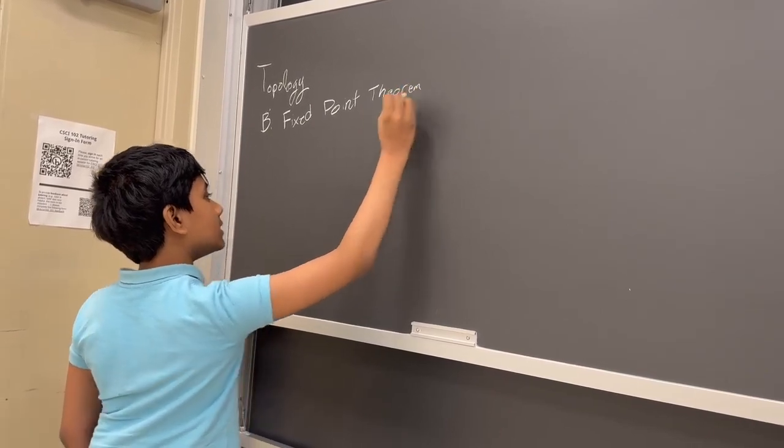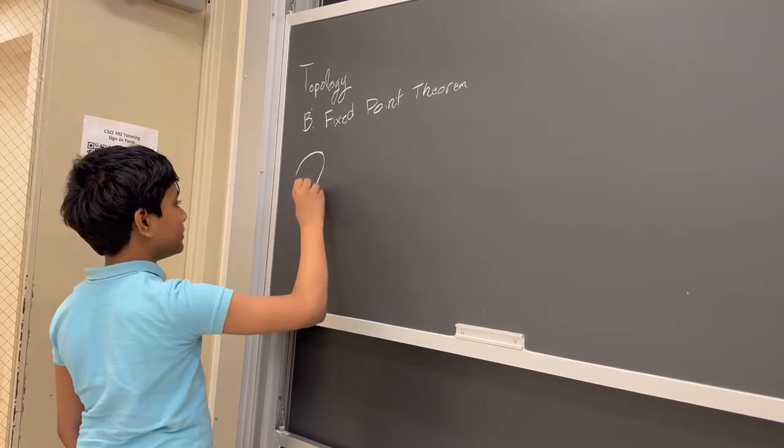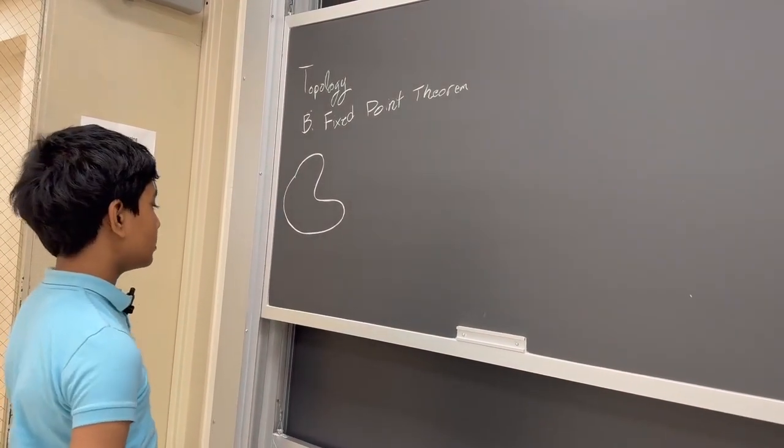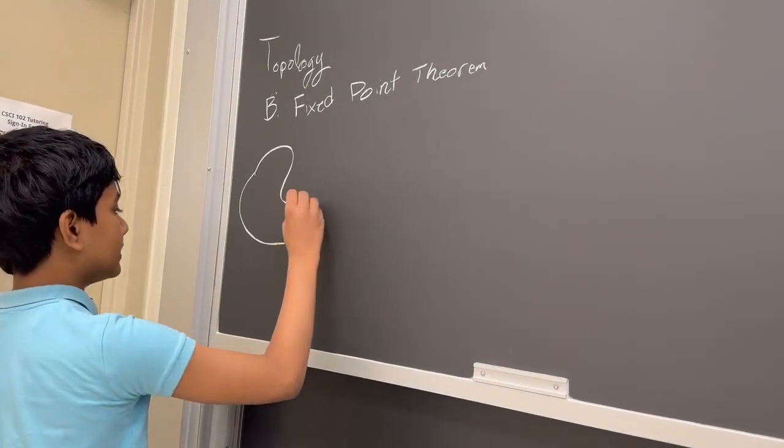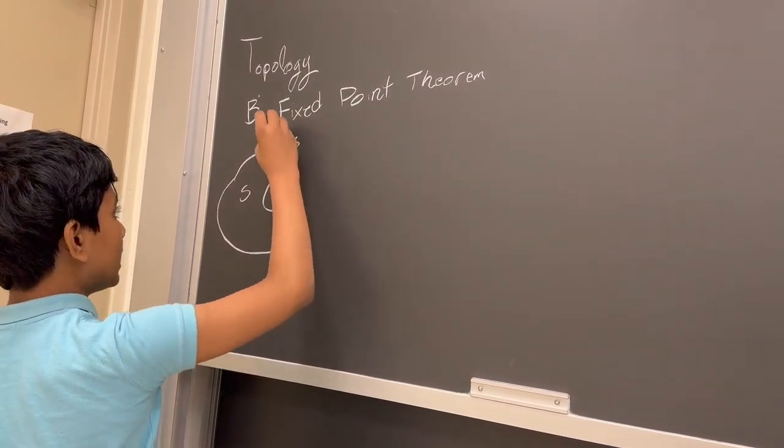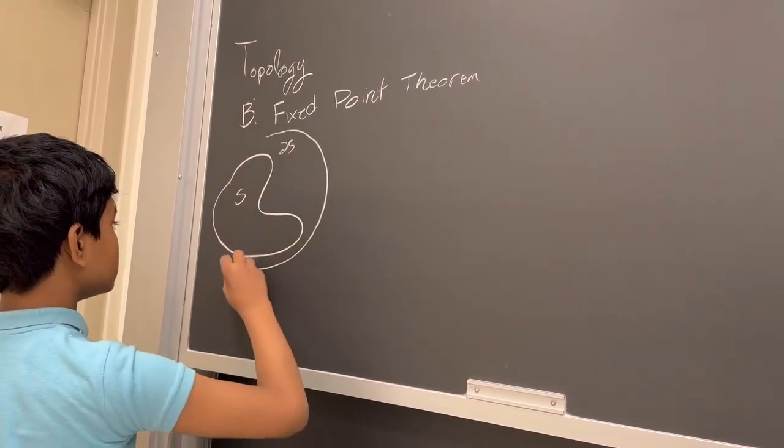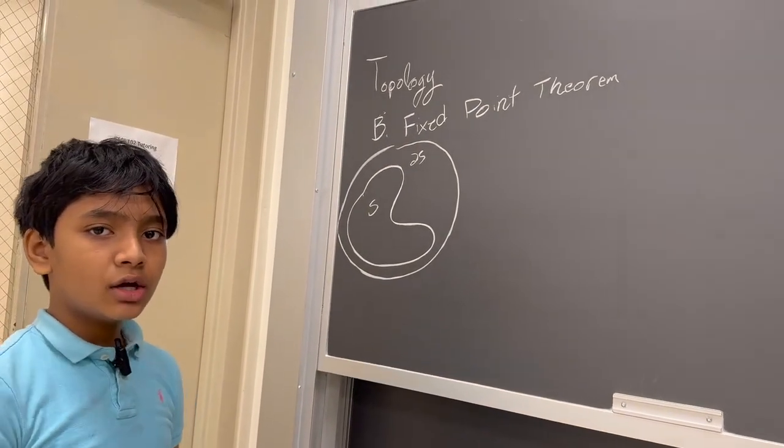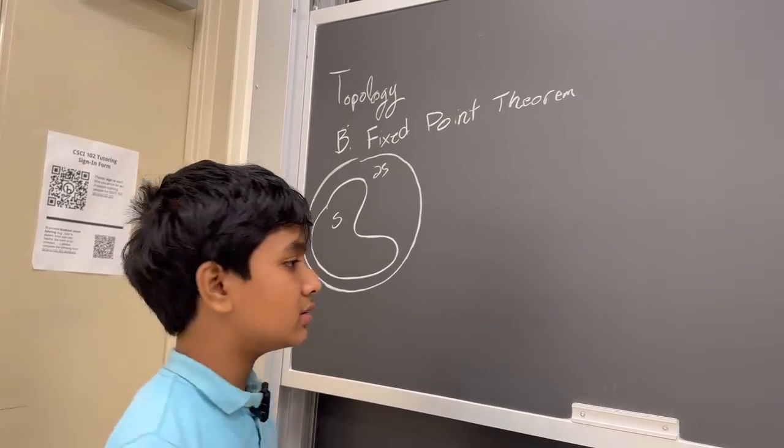And it basically says that for any bounded space that is completely closed, which means it contains its entire boundary, and it can be enclosed within a finite disk, so not like a plane or an angle or anything else like that.